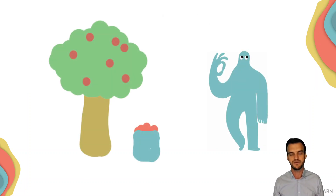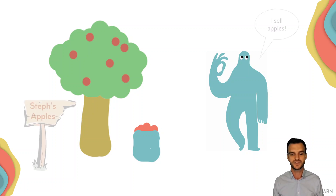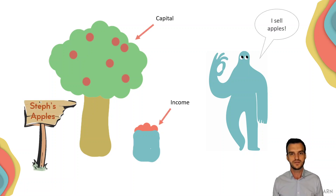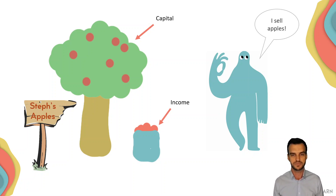Stephanie has an apple shop. She has a couple of apple trees on a property — she grows apples, picks them, and sells those apples, making money. In this case, the income is the money that she receives from selling the apples, while her capital is the apple trees and perhaps the property on which the apple trees are planted.